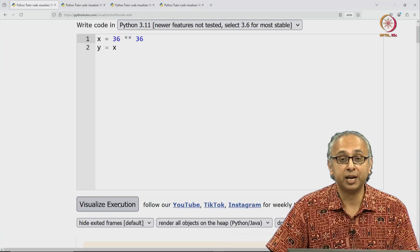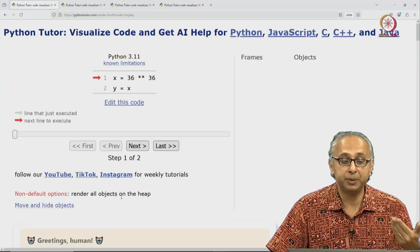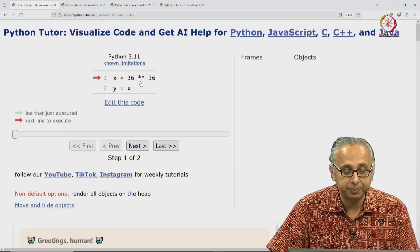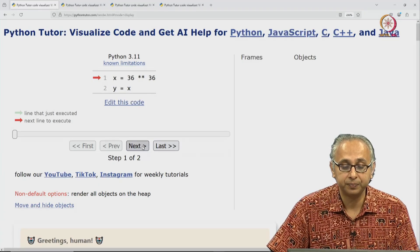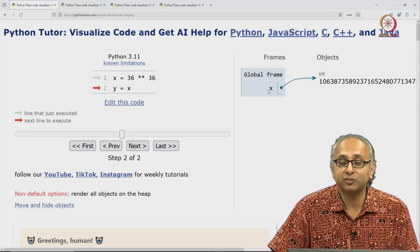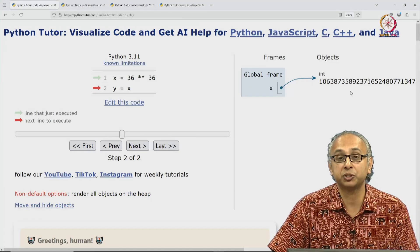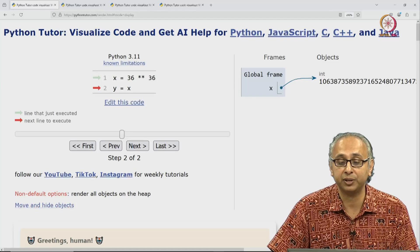Now when we click on visualize execution, the same piece of code will be executed. But this time observe what happens when I click on next. Next, I get this variable x labeling this integer object that was created. This is 36 to the power 36.